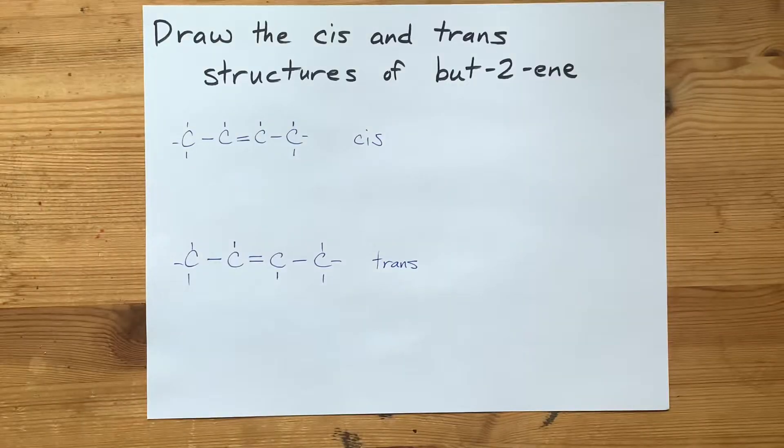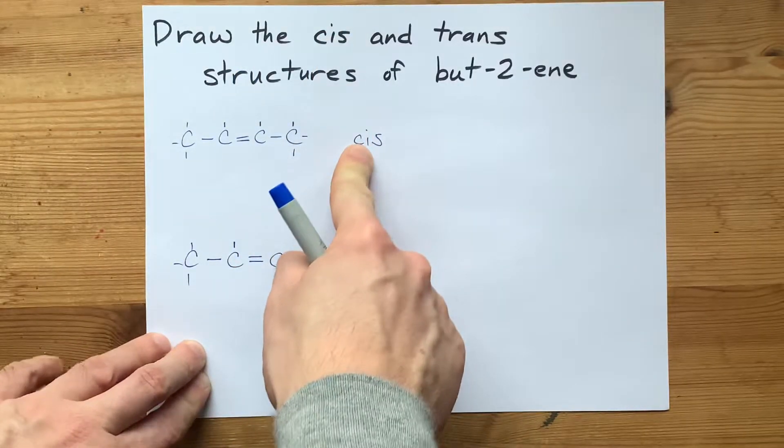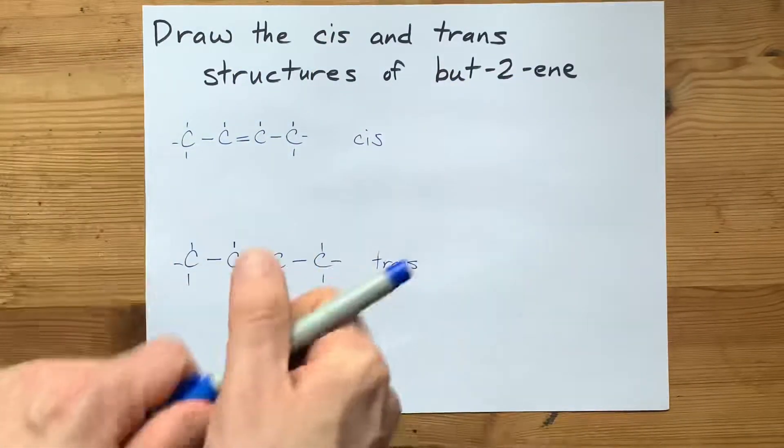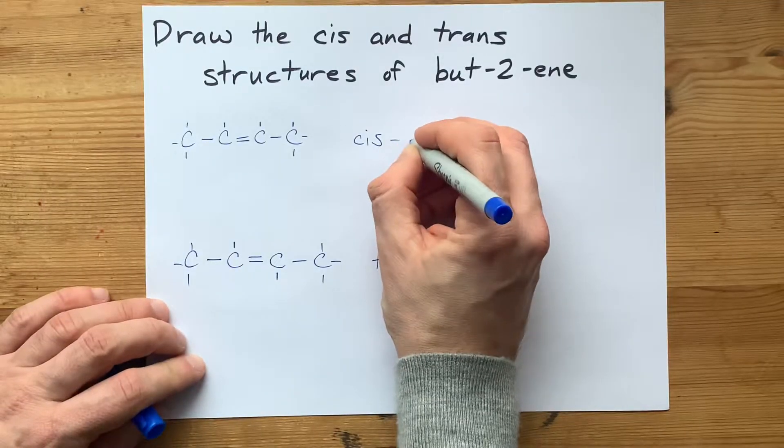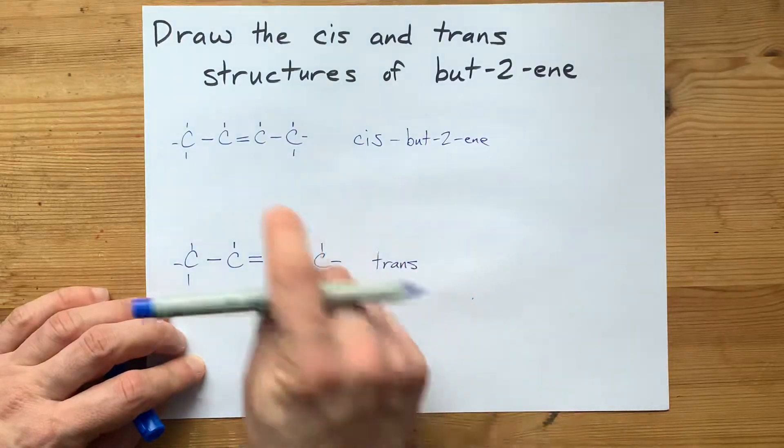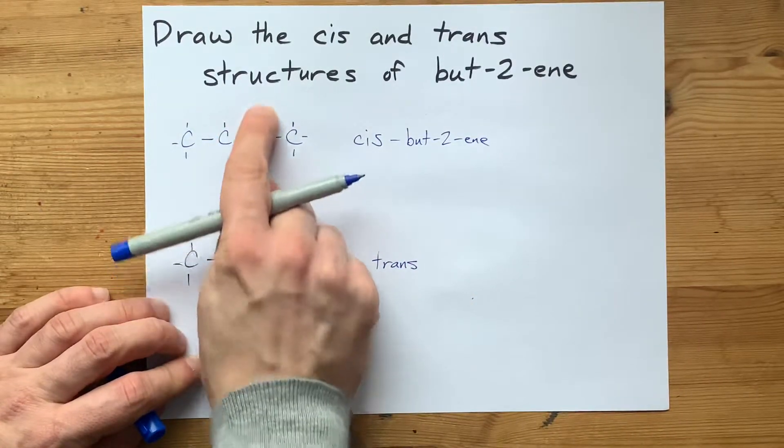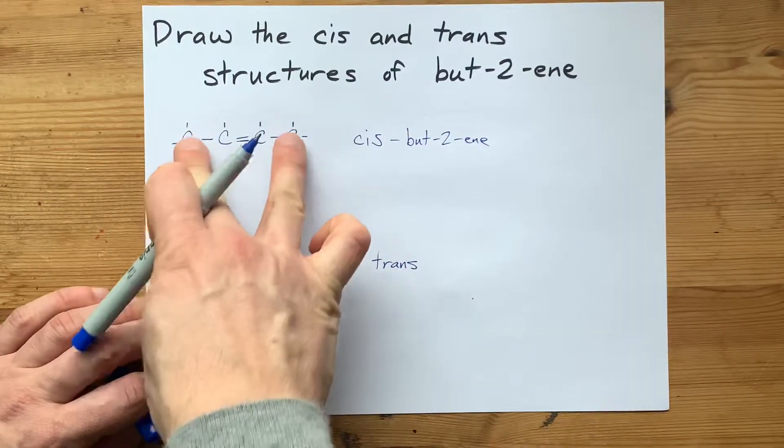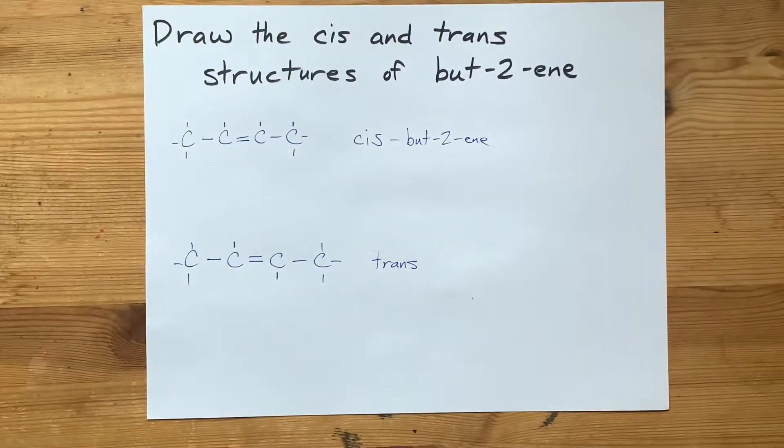So, the idea being, the cis isomer of but-2-ene, or if you want me to name it fully, cis-but-2-ene, has both of the hydrogens and, to be honest, both of the methyl groups on the same side of the double bond.